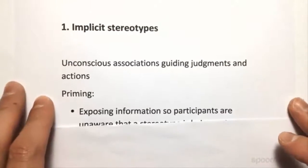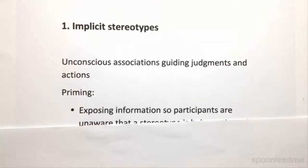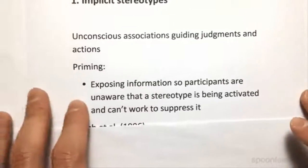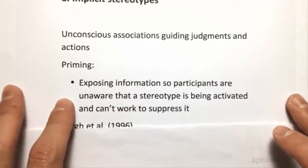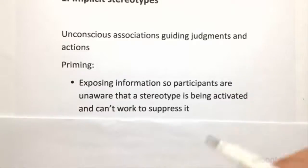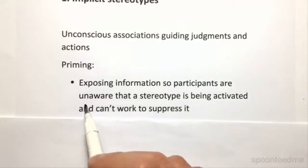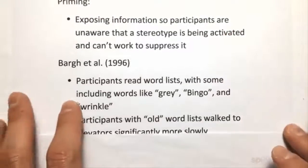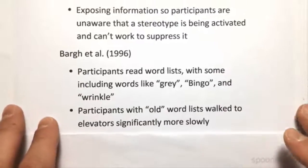An implicit stereotype is when we see a change in behavior because of this kind of priming — these unconscious associations. You kind of chuck in words or suggestions, and the person is unaware of the actual stereotype that's been activated, so it changes their behavior. It's unbiased.